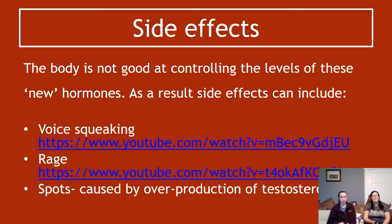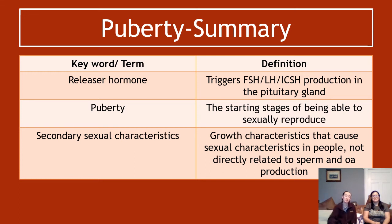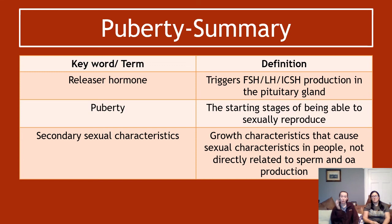To summarize: this video has been on puberty. The main things to know are the releaser hormone — the hormone that triggers FSH, LH, or ICSH depending on whether you're male or female — and that it triggers production in the pituitary gland. You won't be asked to name puberty, but you may be asked what hormone triggers puberty. You also need to know secondary sexual characteristics: what they are, some examples, and the idea that they are growth characteristics causing people to change as they develop into adults able to reproduce. The next video will cover male reproductive hormones in more depth.